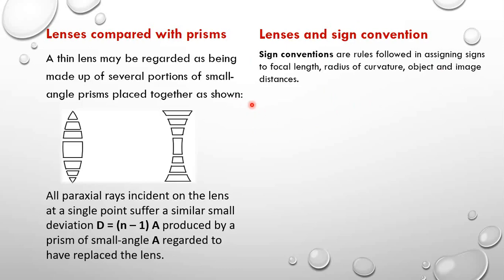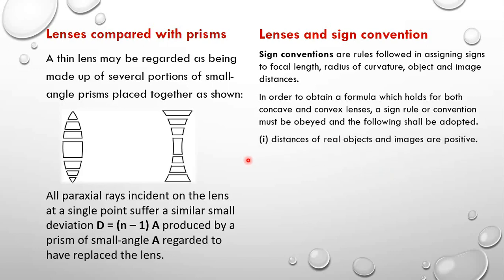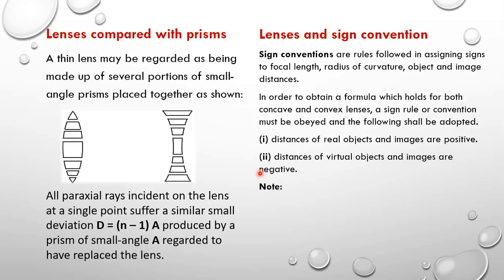These rules are known worldwide. The distances of real objects and real images are always positive — that is, U and V for real objects and real images are positive. The distances of virtual objects and virtual images are negative. Also note that the focal length for a convex lens is positive and the one for a concave lens is negative.